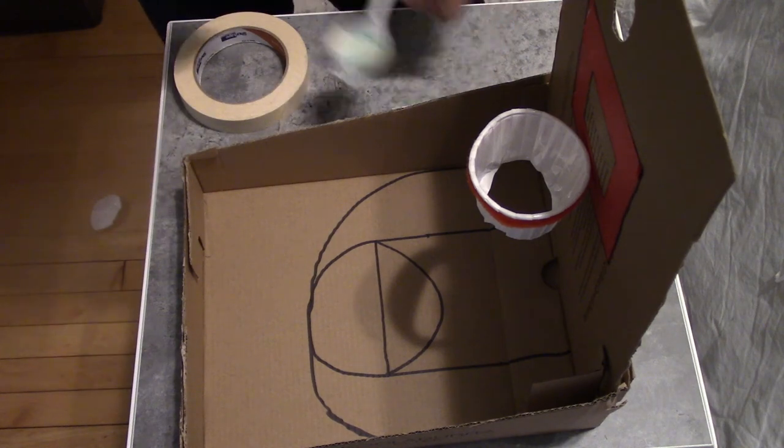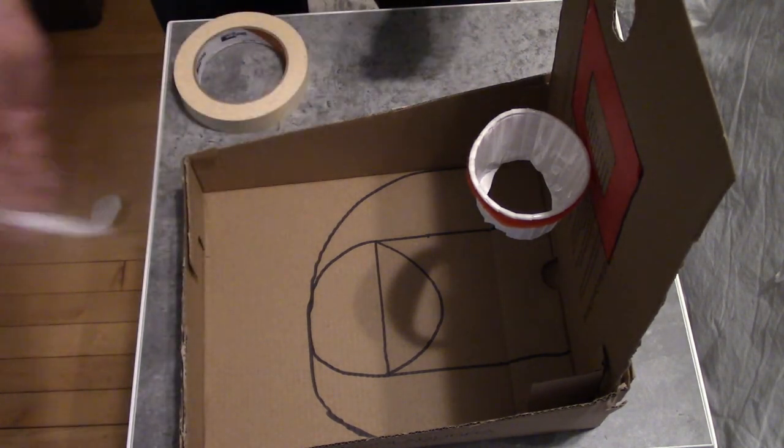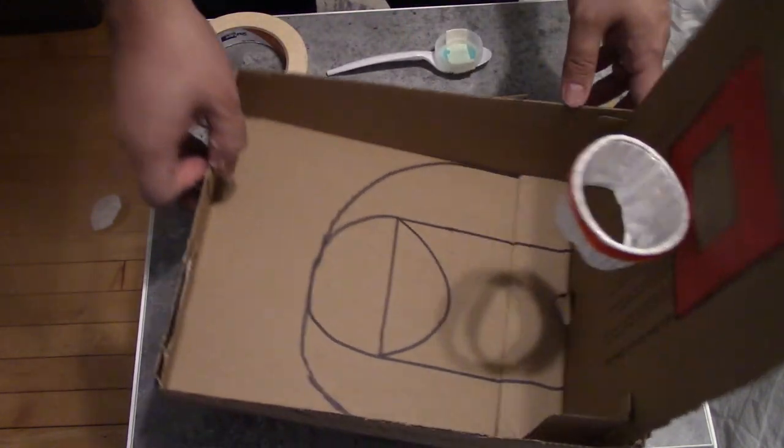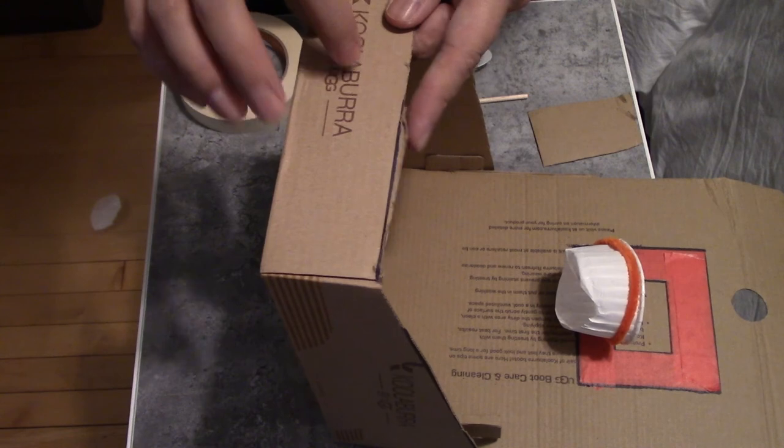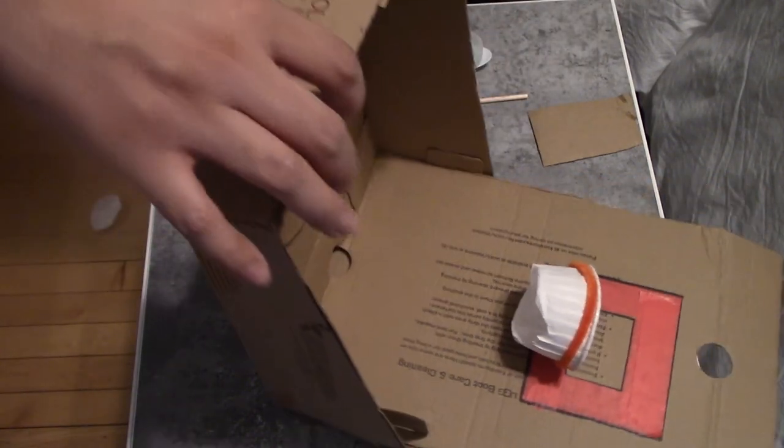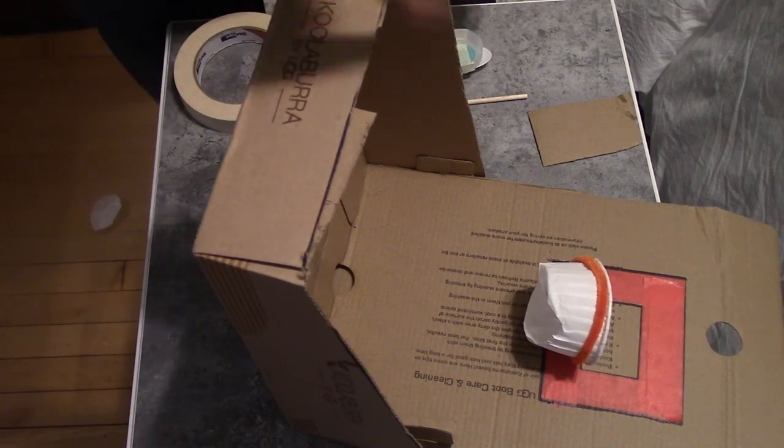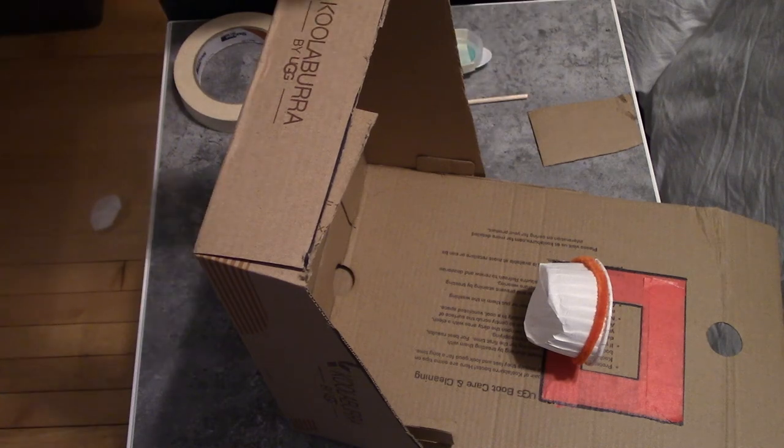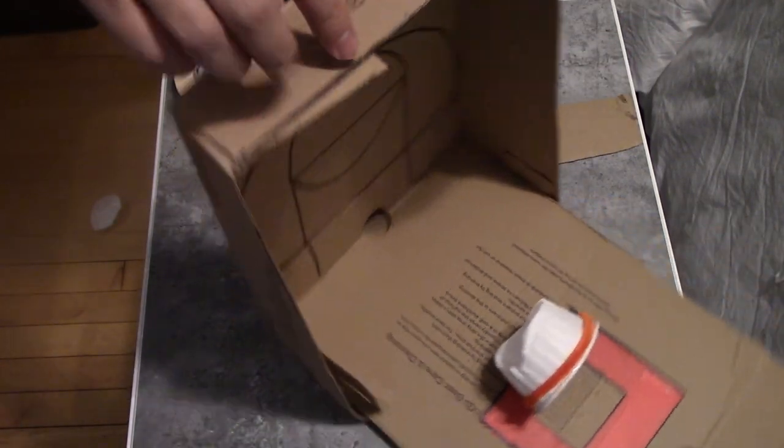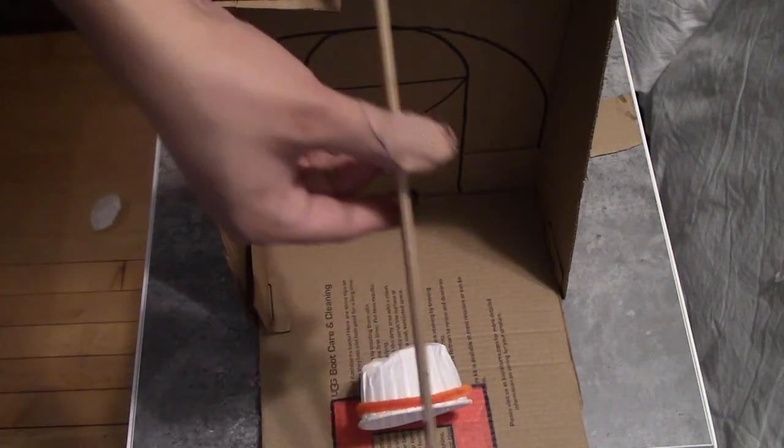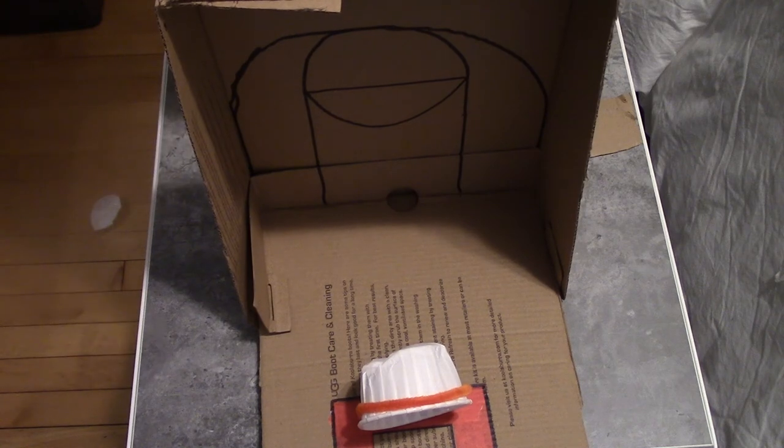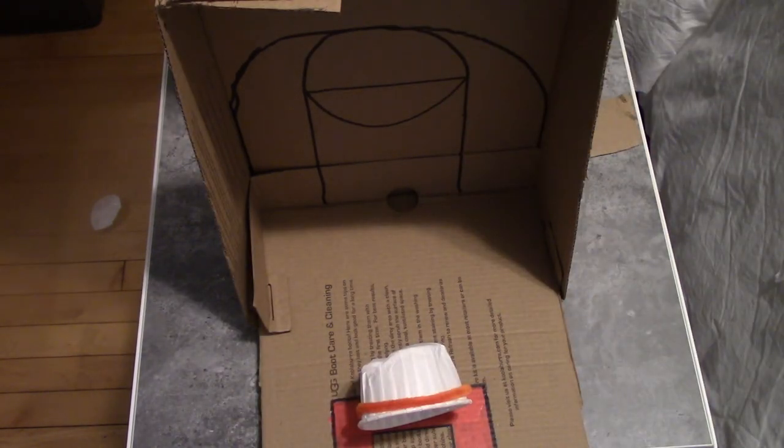Now for your last step, you're going to want to connect your spoon to your basketball court that you've created. So to do that, you're going to make another hole that's going to be right here in the front of your basketball court. You kind of want to try to line it up to your hoop so that when you are launching things, it's not going to the side. So you can use a ruler again to just make sure that it is in that same direction and you're going to want to put it lined up to the backboard so that when you're shooting stuff, it can bounce off and go into the hoop.